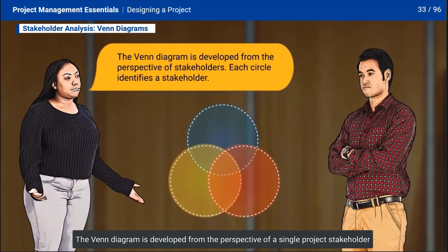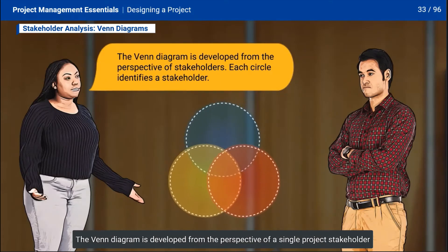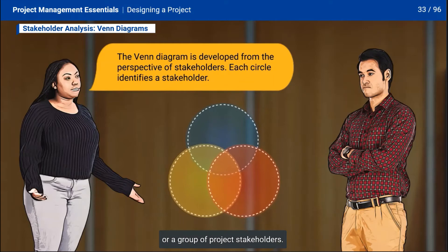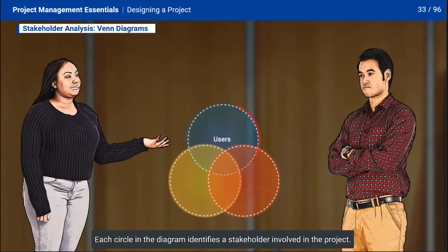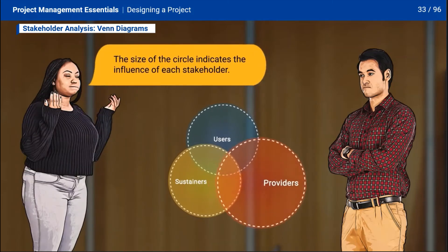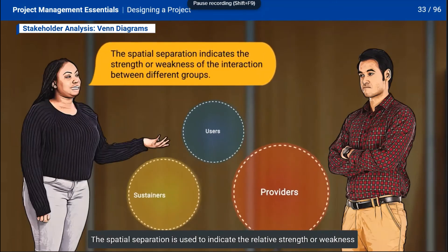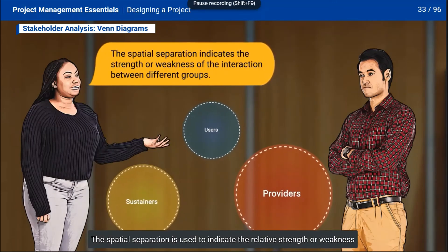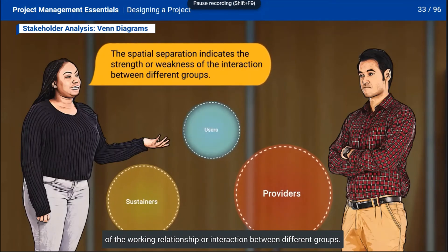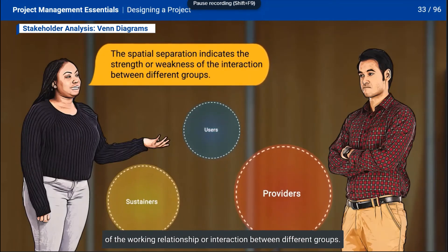The Venn diagram is developed from the perspective of a single project stakeholder or a group of project stakeholders. Each circle in the diagram identifies a stakeholder involved in the project. The size of the circle can help indicate the relative influence of each stakeholder. The spatial separation is used to indicate the relative strength or weakness of the working relationship or interaction between different groups.